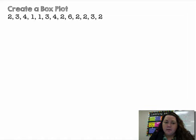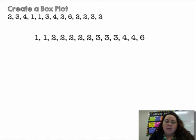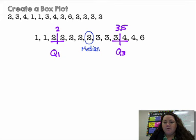Here's another one. I would like for you to pause and try this one on your own. So the numbers in order are like so. The median is 2. My quartile 1 is between these two 2's, so quartile 1 is 2. My upper quartile is between 3 and 4, so 3.5. My minimum is 1, my maximum is 6.